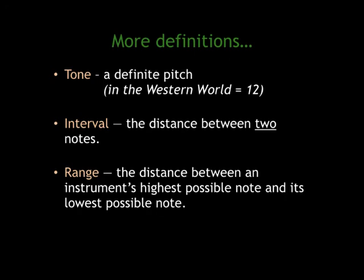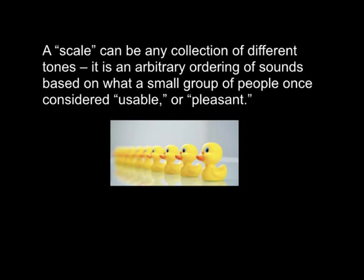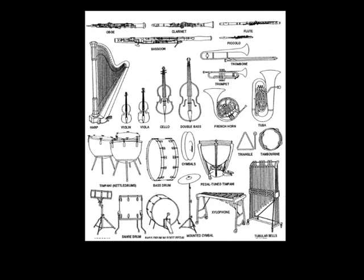Range is the distance between an instrument's highest possible note and its lowest possible note. Different human beings have different ranges to their voice. Some people might have a very narrow range; some people always speak in a high-pitched voice. There are people who have very low voices but are able to produce a falsetto voice — those people might have a larger range. A scale is an arbitrary ordering of sounds based on what a small group of people might consider usable or pleasant. Don't worry if you do not know how to play a musical instrument — the instruments you see on screen are not the only types of instruments you can use in film scoring today.